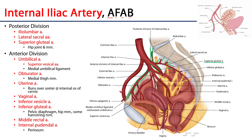The umbilical artery becomes the medial umbilical ligament, found within the medial umbilical fold heading up towards the umbilicus. In fetal circulation it would be patent, still serving as an umbilical artery heading up towards the umbilical cord and the placenta. In the adult, this artery is significant because branches of it descend down to serve the urinary bladder — we call these the superior vesicle arteries.